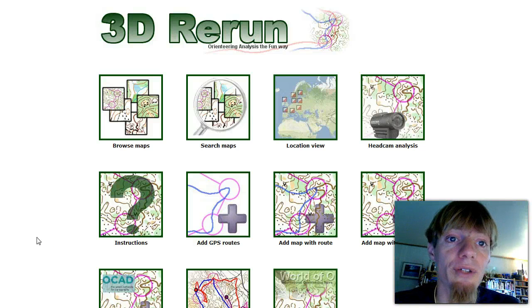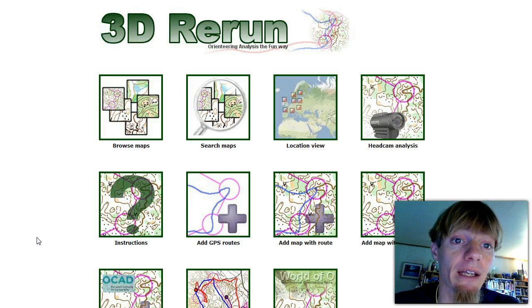Welcome to this short screencast about how to use 3D rerun for orienteering technical analysis. I assume that the map is already in 3D rerun, so we go here and click 'Browse Maps'.